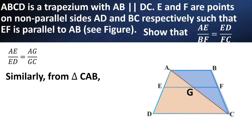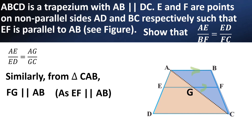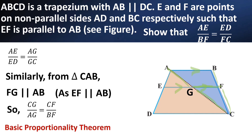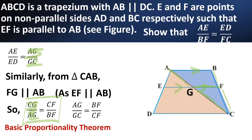We also have another triangle: triangle CAB. In triangle CAB, FG is parallel to AB — since EF is parallel to AB, so FG is also parallel to AB. So by using the Basic Proportionality Theorem, CG/GA is equal to CF/FB. This is the third side.